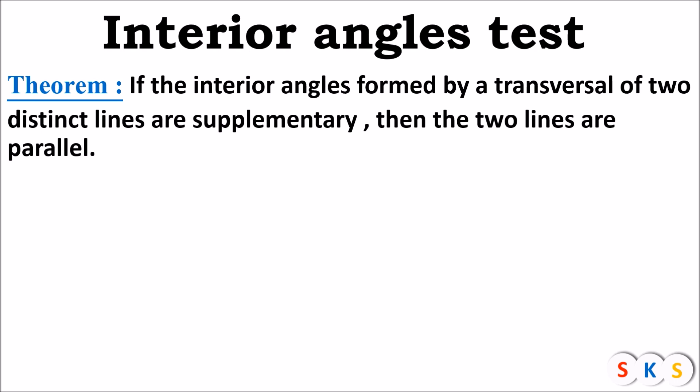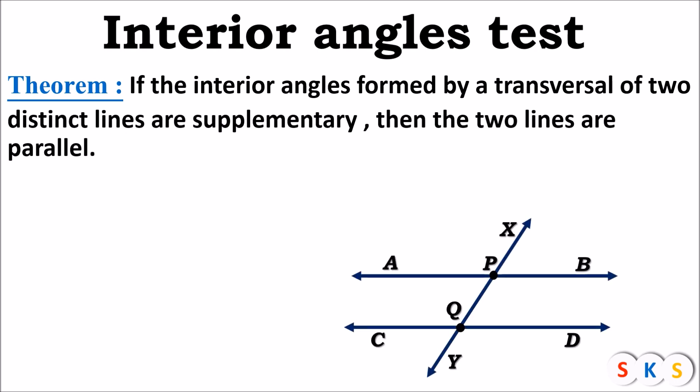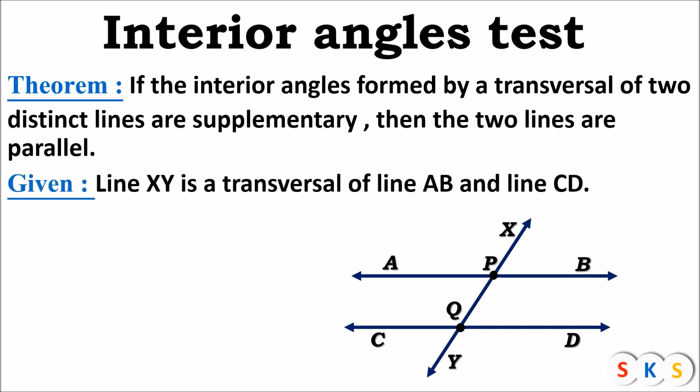And what we have to prove is that the two lines are parallel. We will draw a figure as per the given information. Here we have line AB and line CD, both intersected by a transversal XY. So what is given: line XY is a transversal of line AB and line CD. Now we will choose one pair of interior angles.